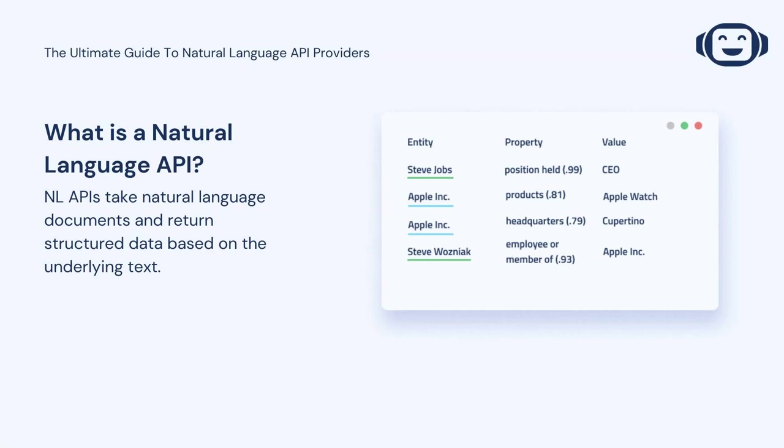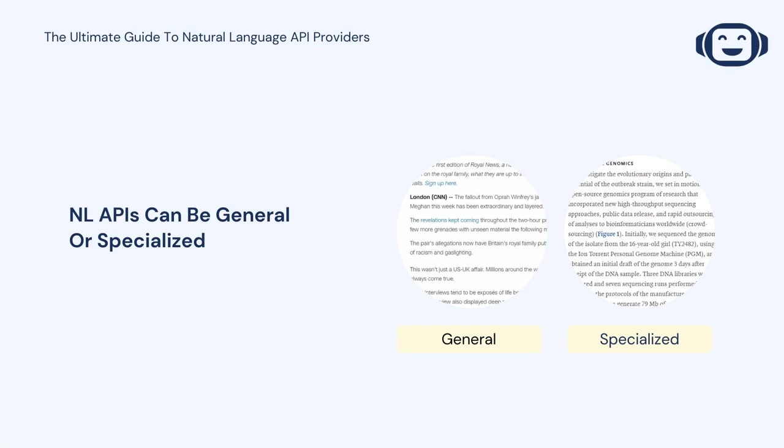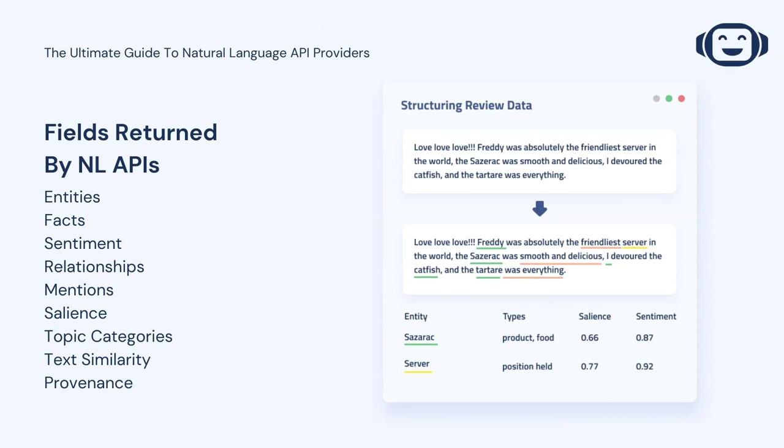First off, what is a natural language API? At their simplest, natural language processing APIs are services that allow you to pass unstructured natural language corpora to them. They then process this natural language with the aim of returning structured data based on the underlying text. NL APIs utilize machine learning to hone their ability to process text. Some services offer the ability to train your own model, while others are pre-trained. NL APIs can be general, applied to a wide range of text types, or specialized — for example, NL APIs meant to mine into user reviews or medical records. The types of structured data fields typically returned by NL APIs often include a selection of the following.